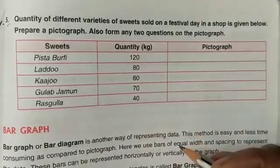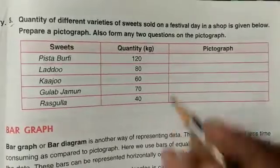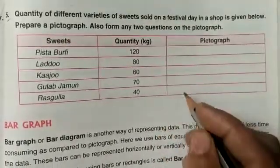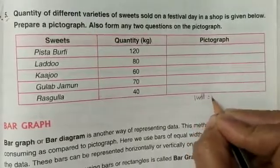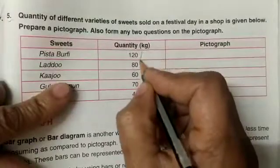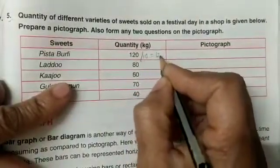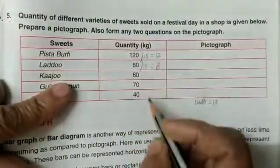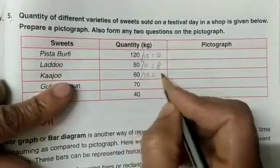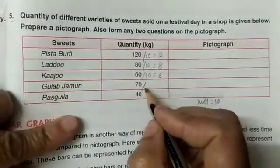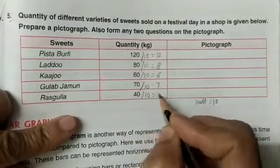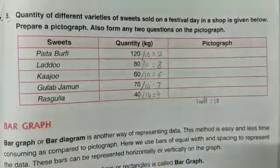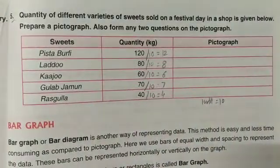Quantities in kilograms: pista barfi — 120 kg, laddu — 80 kg, kaju — 60 kg, gulab jamun — 70 kg, and rasgula — 40 kg. You have to draw the picture. You can take one unit equal to 10. So: 120 ÷ 10 = 12, 80 ÷ 10 = 8, 60 ÷ 10 = 6, 70 ÷ 10 = 7, 40 ÷ 10 = 4.